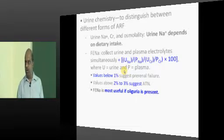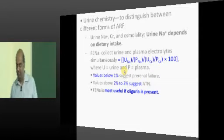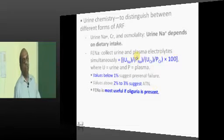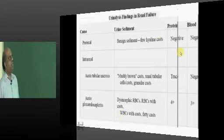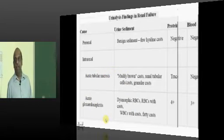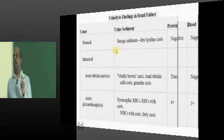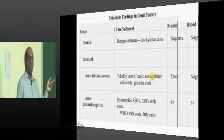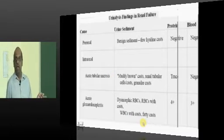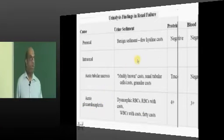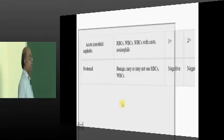When you do the FENa calculation, if it is less than 1%, it is an important clue indicating pre-renal failure. To review: in pre-renal, hyaline casts are the clue; muddy brown casts are typical of tubular necrosis (ATN); dysmorphic RBC casts or fatty casts are typical of glomerulonephritis. There is no significant proteinuria in pre-renal, but 4+ proteinuria is suggestive of glomerulonephritis.